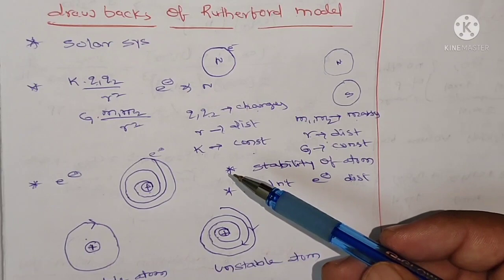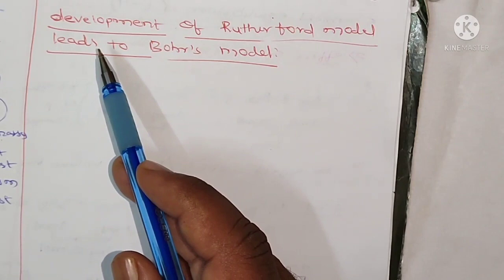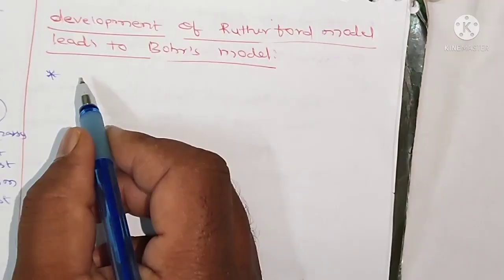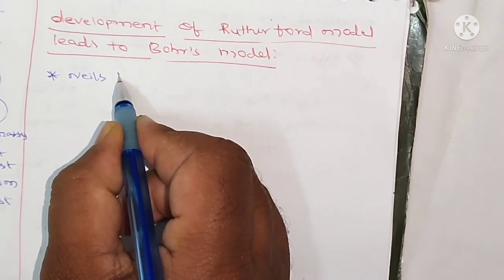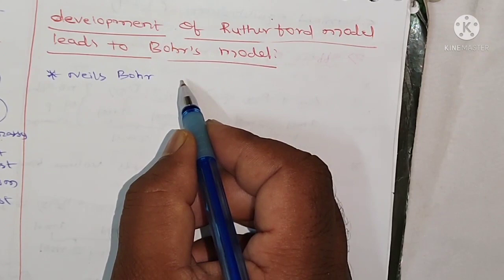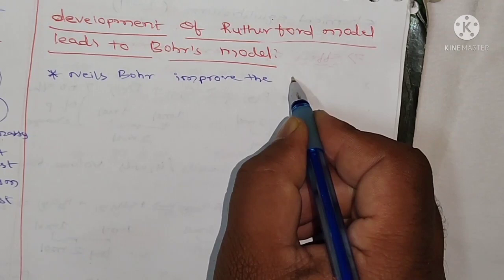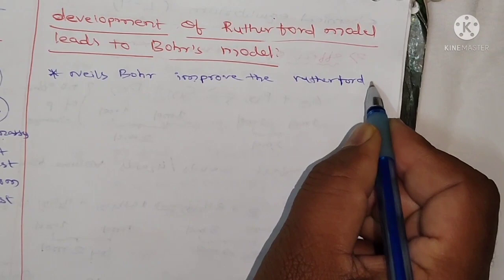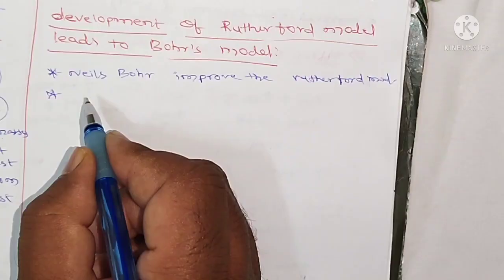So these are the drawbacks of the Rutherford model. Development of the Rutherford model leads to Bohr's model. Niels Bohr improved the Rutherford model. Two developments played a major role in the Bohr's model of atom.